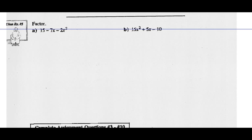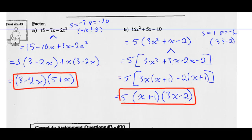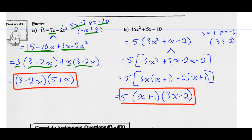Try the last two on your own. For part A: what two numbers have a sum of negative 7 and a product of 15 times negative 2, or negative 30? Those two numbers are negative 10 and positive 3. Decompose negative 7X into negative 10X plus 3X, then factor by grouping. Common factor of 15 and negative 10X is 5, leaving 3 minus 2X. Common factor of 3X minus 2X squared is X, leaving 3 minus 2X. Factor out 3 minus 2X, leaving 5 plus X.